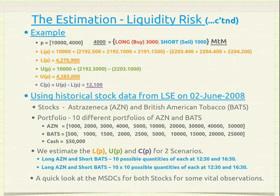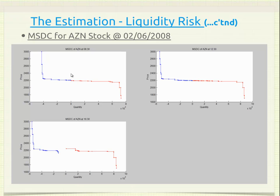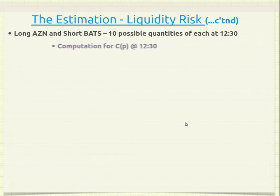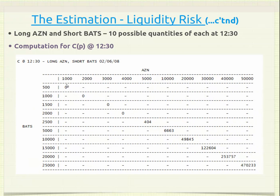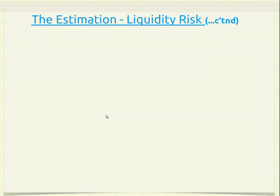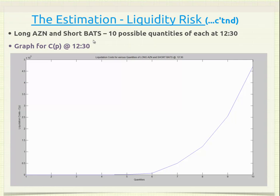We look at the marginal supply demand curve (MSDC) for both stocks for some vital observations. For the AZN stock at different timestamps: the spread is tight at 8:30, much tighter at 12:30, but quite loose at 4:30. Similarly for the BATS stock, the spread is tight at 8:30, much tighter at 12:30, but quite loose at 4:30. This influences the results when computing C. We see zero liquidation cost for AZN at 12:30 because the spread was very tight, while the BATS computation shows a higher liquidation cost.